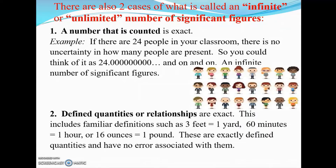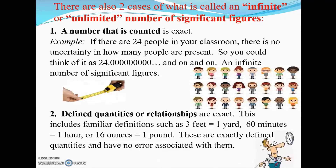The other example is defined quantities or relationships. That includes things like three feet equals one yard — that's the very definition of a yard, so there's no ambiguity at all. It's an infinite number of significant figures. Similarly, 60 minutes is one hour, and 16 ounces is a pound. Those are all defined quantities, so they're considered to have an infinite number of significant figures.